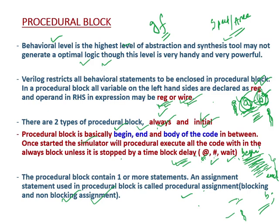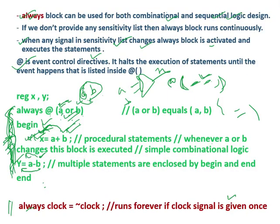Once started, the simulator will procedurally execute all the code within the always block unless it is stopped by a time-block delay. Since there is no sensitivity list here, this statement will run forever — it won't stop. So if I give clock an initial value of 0, it will be inverted to 1, then 0, then 1, and so on continuously. It runs forever once the clock signal is given.